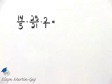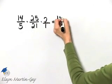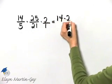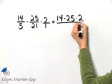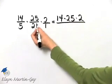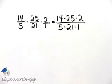And then how do we work this? It's simply numerator times numerator times numerator. So 14 times 25 times 2 all over denominator times denominator times denominator, 5 times 21 times 1.